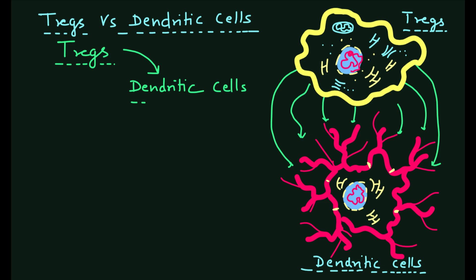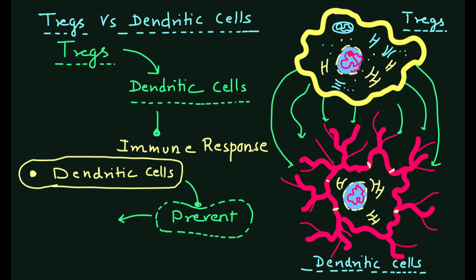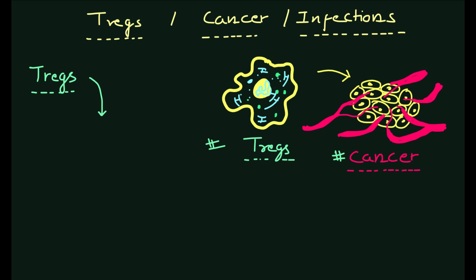Tregs can also modulate the activity of dendritic cells which are important for initiating immune response. By suppressing the activation of dendritic cells, Tregs can prevent the activation of other immune cells and promote immune tolerance.